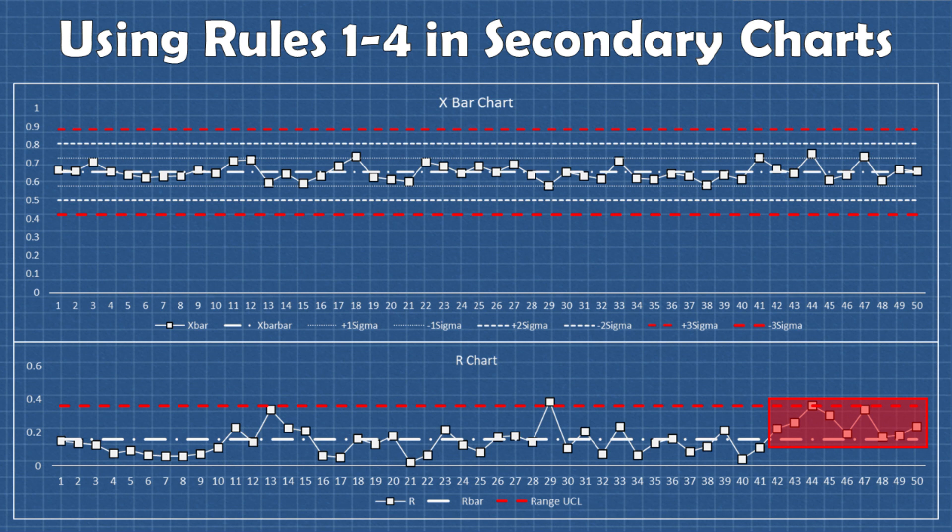This could be an indication that the machine is degrading in some way. Maybe a bushing was cracked or something is loose. The machine degrading wouldn't necessarily affect the between subgroup variation of the process because even though the variation in the samples is increasing, the X bar values might still average out to be within the normal range from subgroup to subgroup.